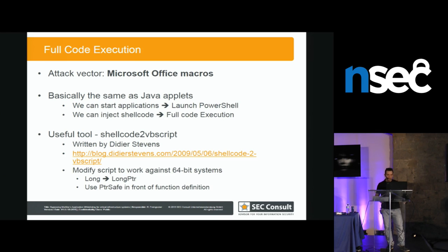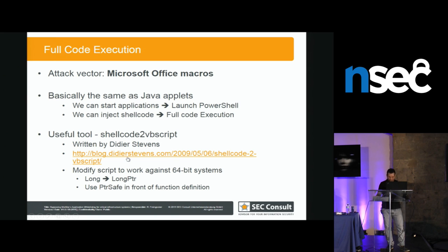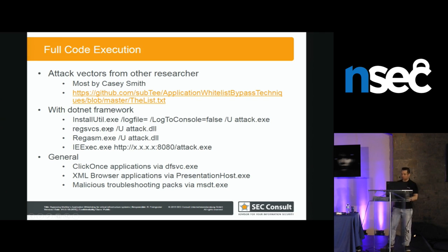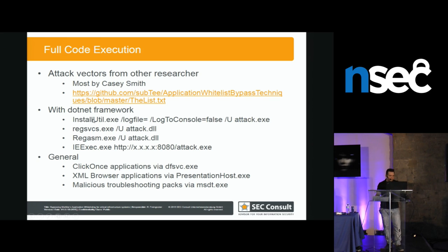The same applies to Office macros. Basic attacks are really prevented — for example, a customer with AppLocker had a dropper that was blocked because it drops a file. But you can modify it using shellcode-to-VBA-script, executing everything in memory inside the Office process, and it works again. There are also other techniques from other researchers. For example, targeting .NET framework — present since Windows 7 — you can say 'start installutil' and installUtil will load your attack.exe into its own process space and execute it there. Even if attack.exe isn't in the whitelist, it runs inside the installUtil process. This also bypasses endpoint protection systems and antivirus because they scan installUtil, not attack.exe.